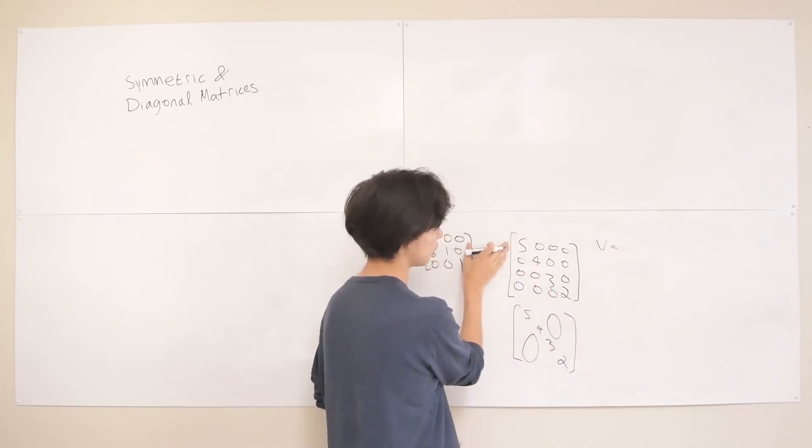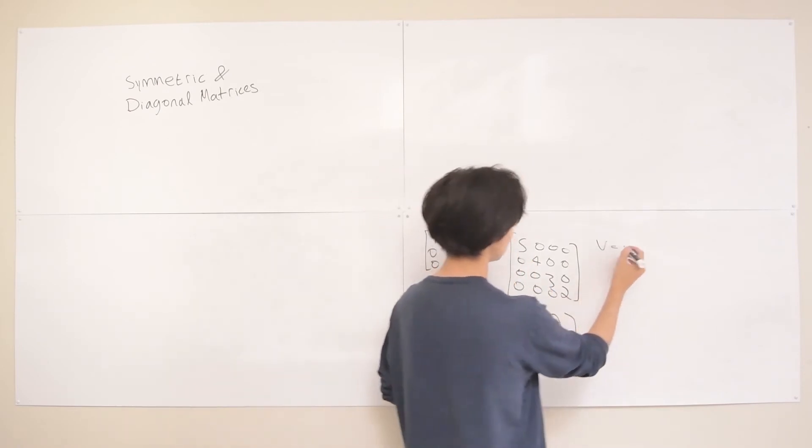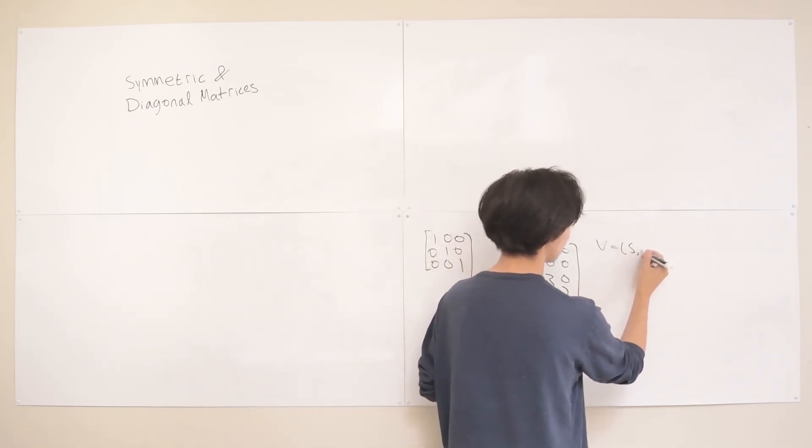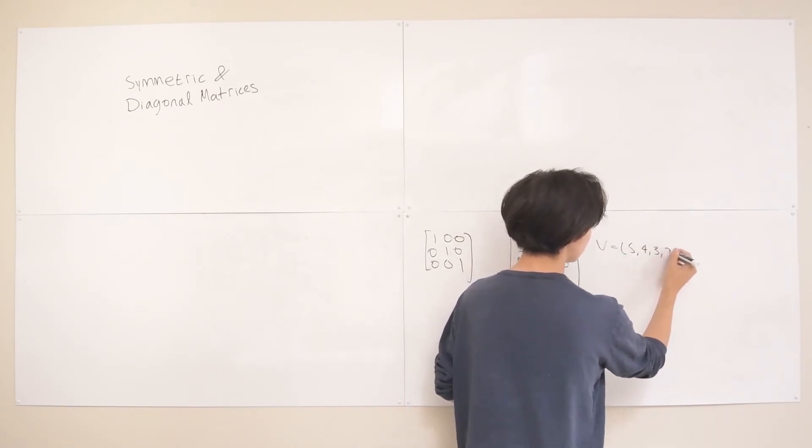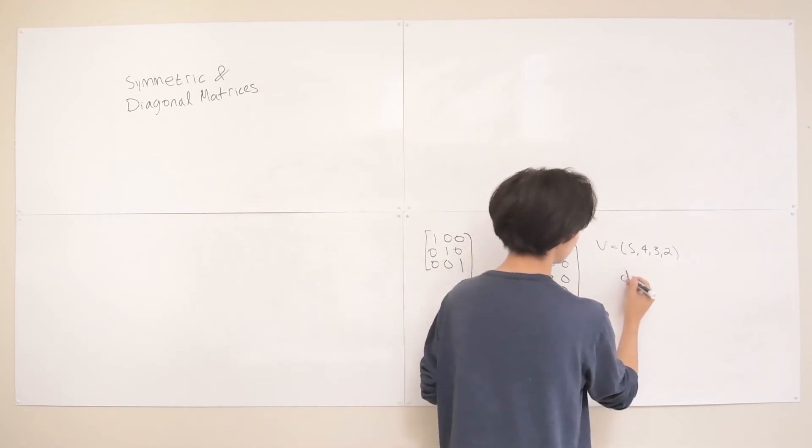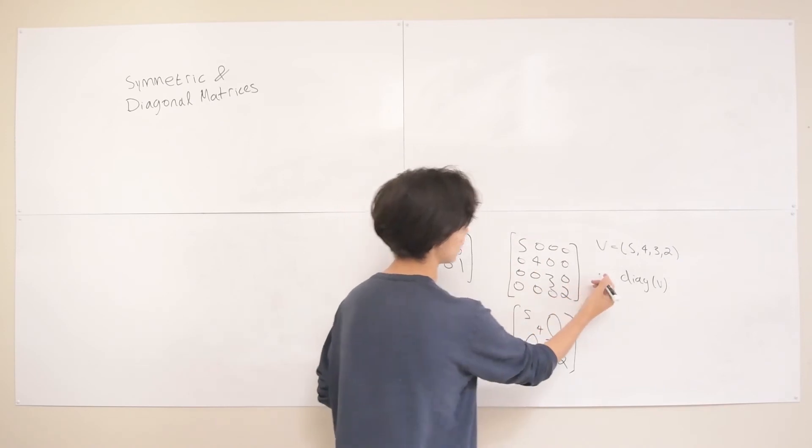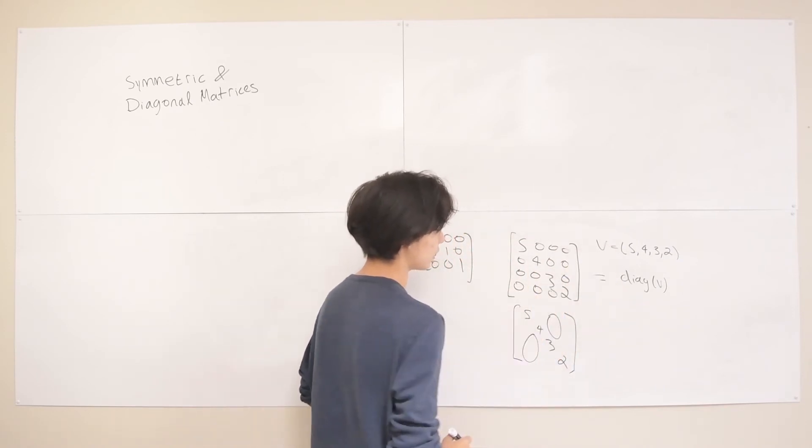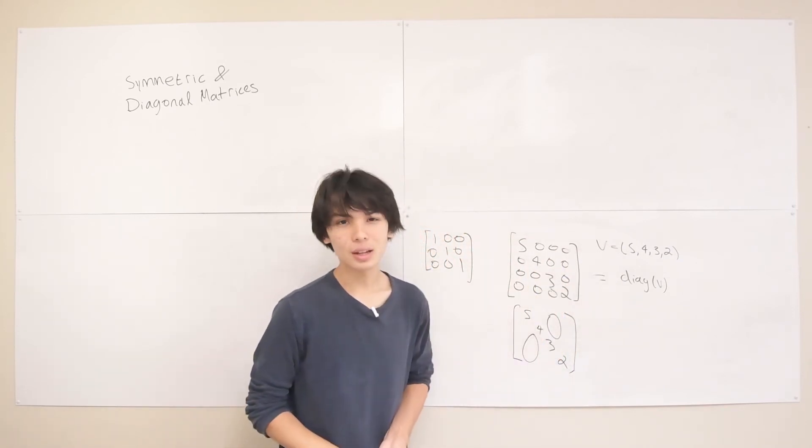Which basically has all the diagonal elements in it. So 5, 4, 3, 2. So we define a vector first, and then we call this diag(V). And that basically just is the same thing as these two are identical. All right, so you'll see that a lot in text.